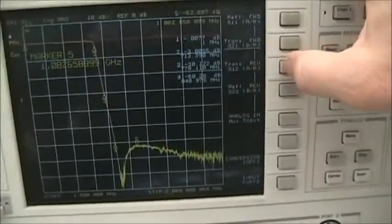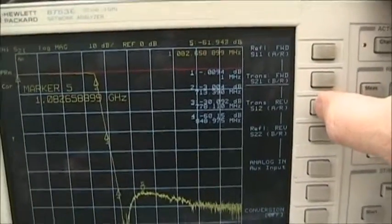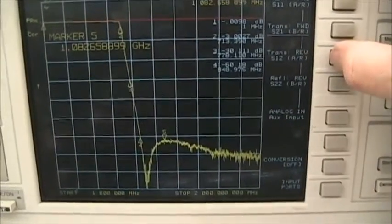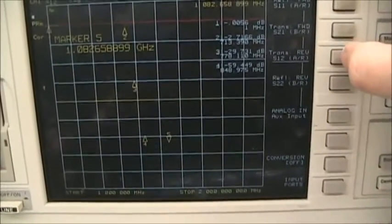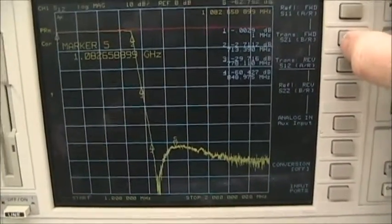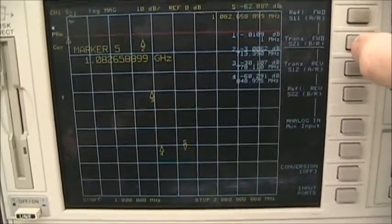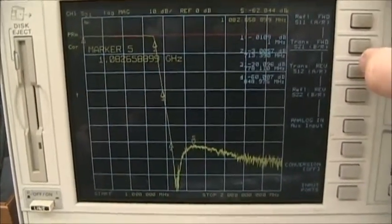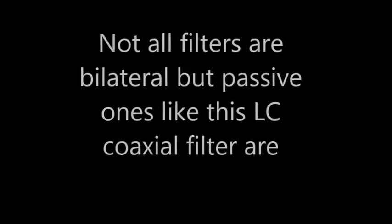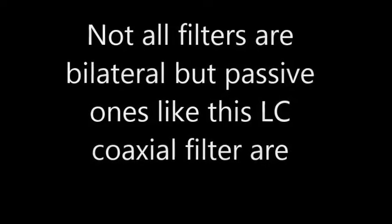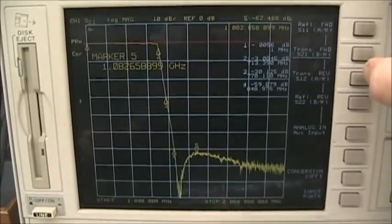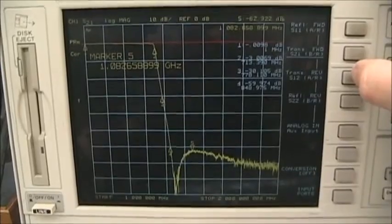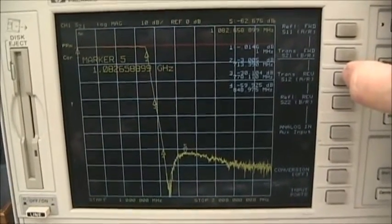If we take a look at S12, remember that is looking at the input from the output side. We'll notice that S21 and S12 are almost identical. That's because a filter is a bilateral device. You can turn it around and it works the same way. Not all devices, in particular amplifiers, work that way.